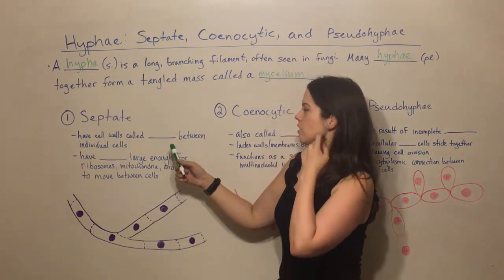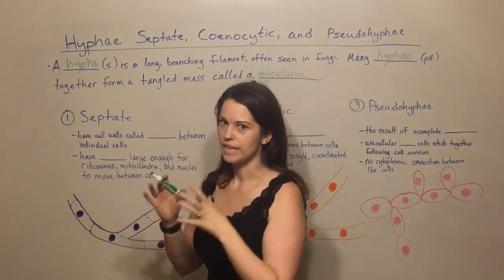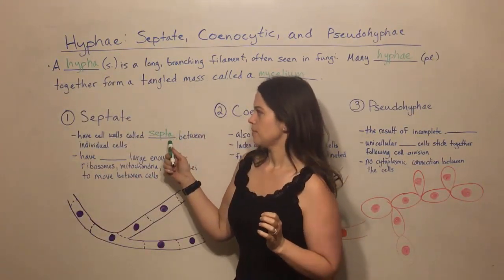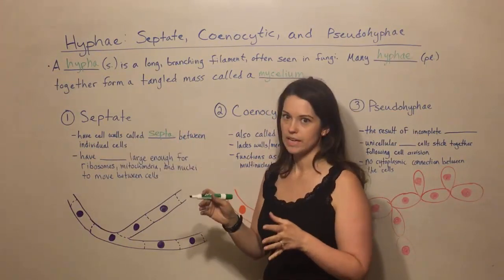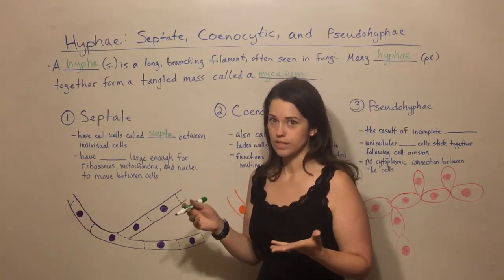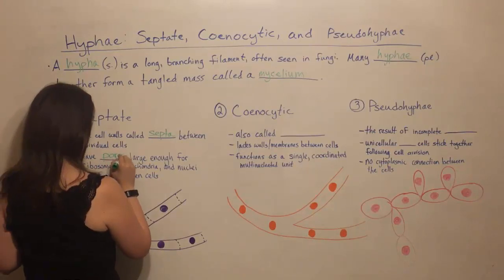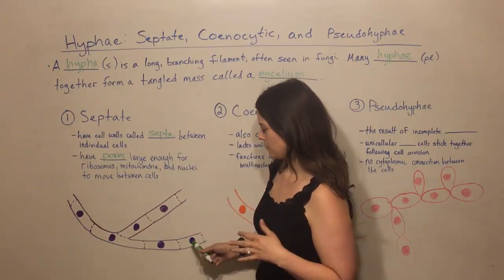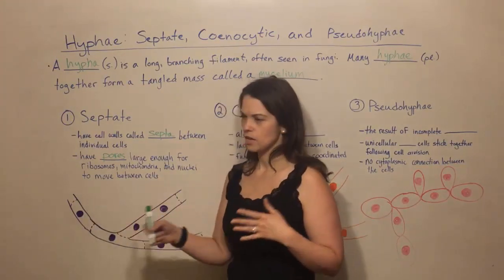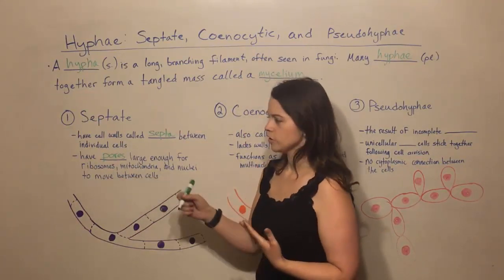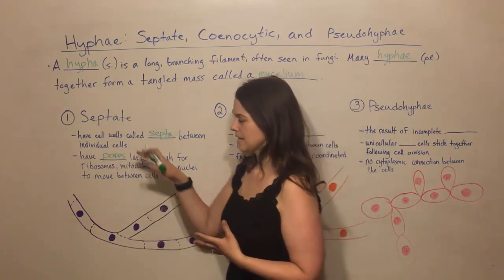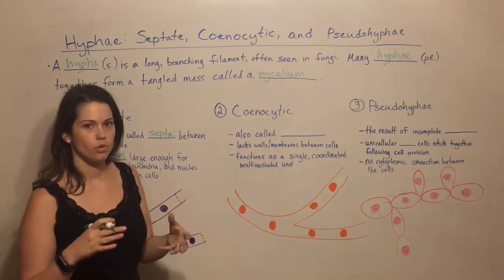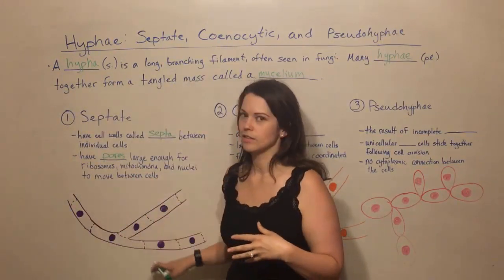First we have septate hyphae. Septate hyphae are those that have cell walls between the individual cells, and these cell walls are called septa — that's where we get the term septate. These septa have pores in them, and these pores are large enough for things to move between cells. So things like ribosomes, mitochondria, even nuclei can actually move between cells in septate hyphae. We classify the three types based on properties of cell division, and here we have full cell division, although those pores are present.